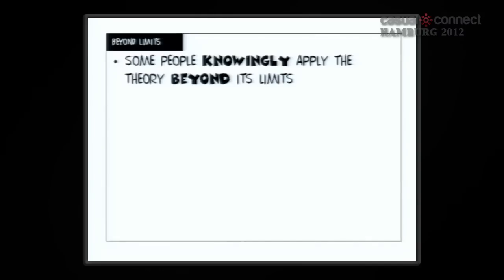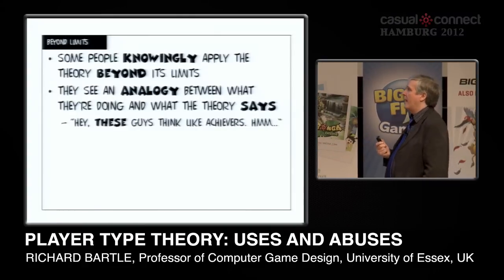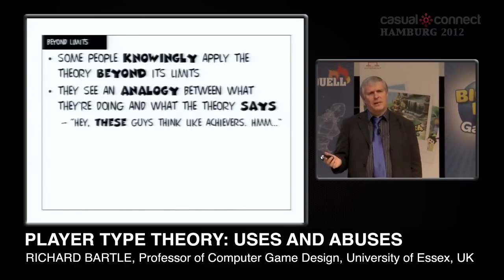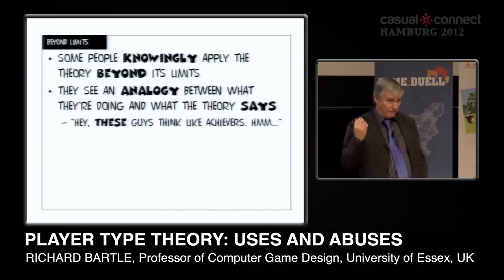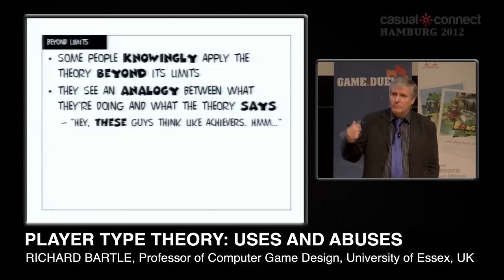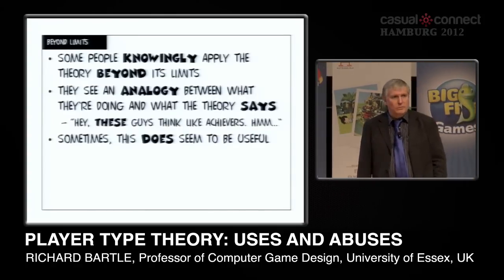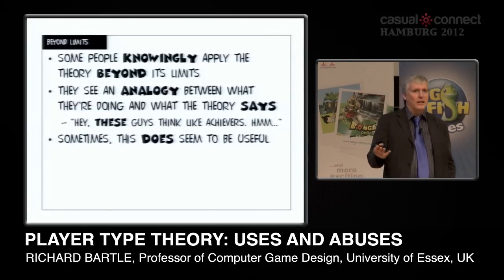Some people know the theory, they know they're applying it beyond its limits, and yet they see reasons why it might work. They see an analogy between what the theory says and what they're looking for. They might think, well, these guys are thinking a bit like achievers, so perhaps some of the player type theory would work. And sometimes, so long as you remember it's an analogy, it does work.